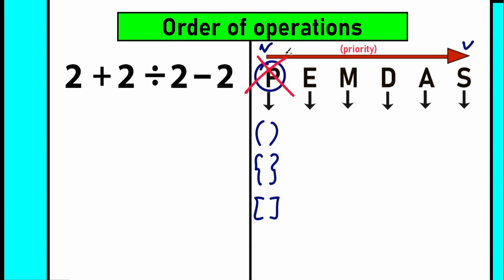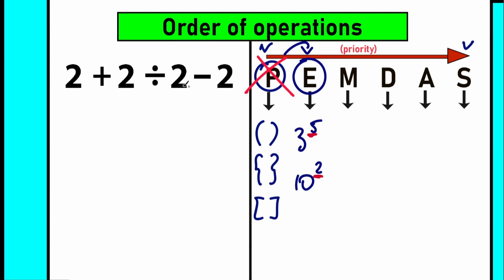We don't have parentheses, we don't have exponents. We move forward to the next step: one group — Multiplication and Division. Multiplication and division are tied for priority and importance. Whenever we have a mix of multiplication and division signs, we perform them in a strict order from left to right. M stands for multiplication, D stands for division. So if multiplication appears first from left to right, we perform multiplication first. If division appears first, we perform division first.